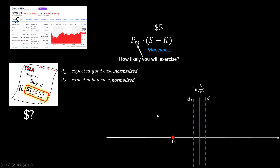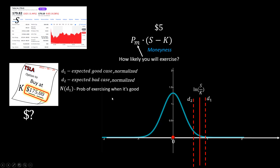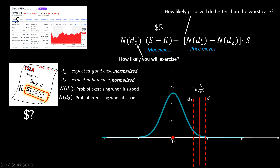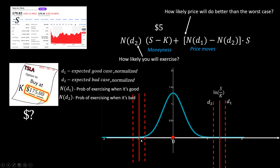That probability can be measured against the standard normal distribution. So N(D1) is the probability of exercising when it's the good case, and N(D2) is the probability of exercising when it's the bad case. Now, what's the probability of exercising the contract? We use the probability of the bad case, N(D2). This would be an underestimate because the price could do better than the worst case. That's why we need to add an extra term accounting for a beneficial price move, but it should also be weighted by the probability that the price will do better than the worst case.